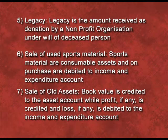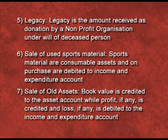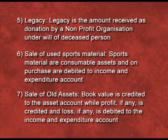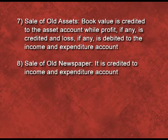Seventh is sale of old assets. Assets are shown on the asset side of the balance sheet. But if there is a profit on sale of an old asset, we show the profit on the income side of the income and expenditure account. If there is a loss, we show it on the expense side. The next item is sale of old newspaper — the amount received from newspapers is of regular nature, so it is a revenue nature item and we transfer this amount to the income and expenditure account on the income side.